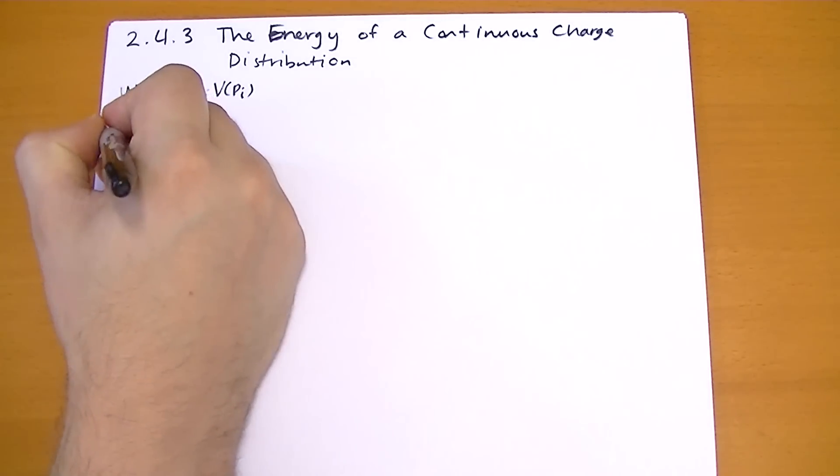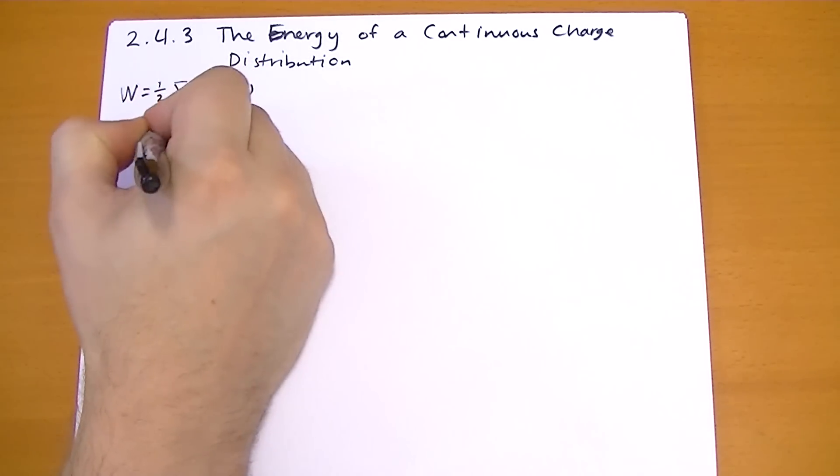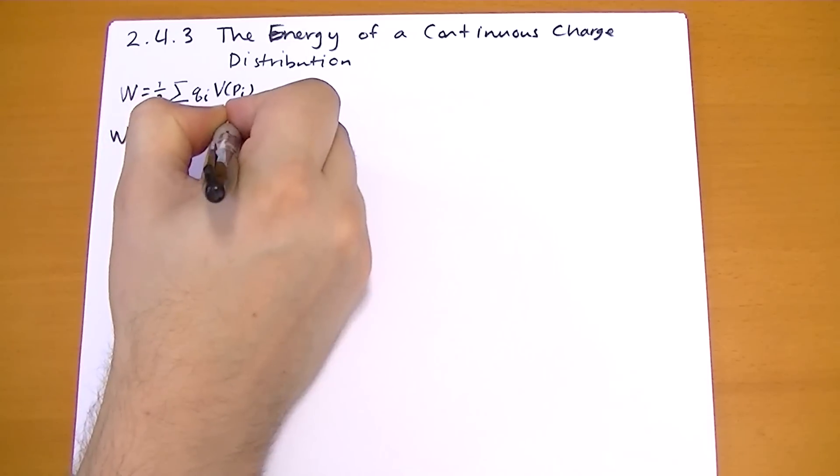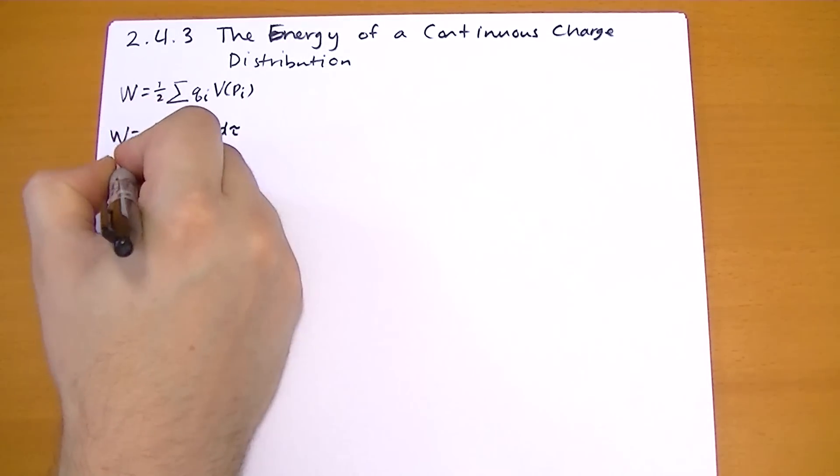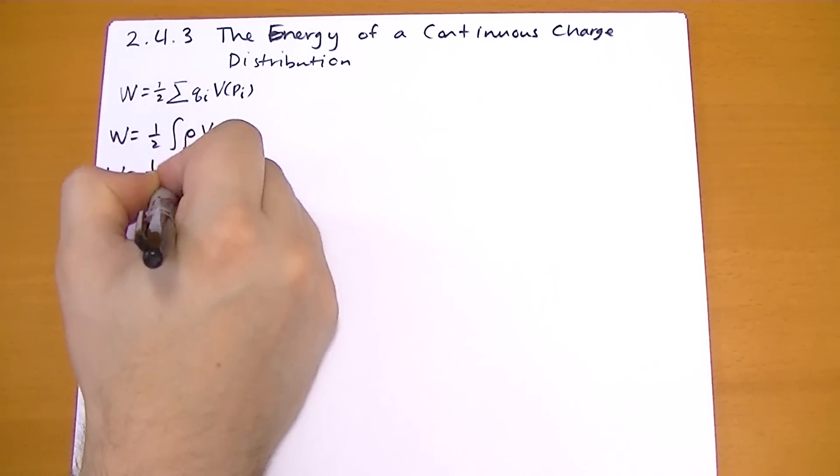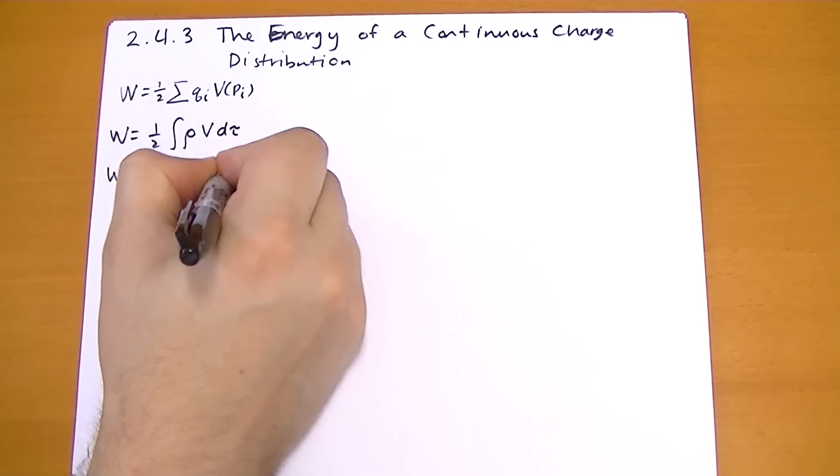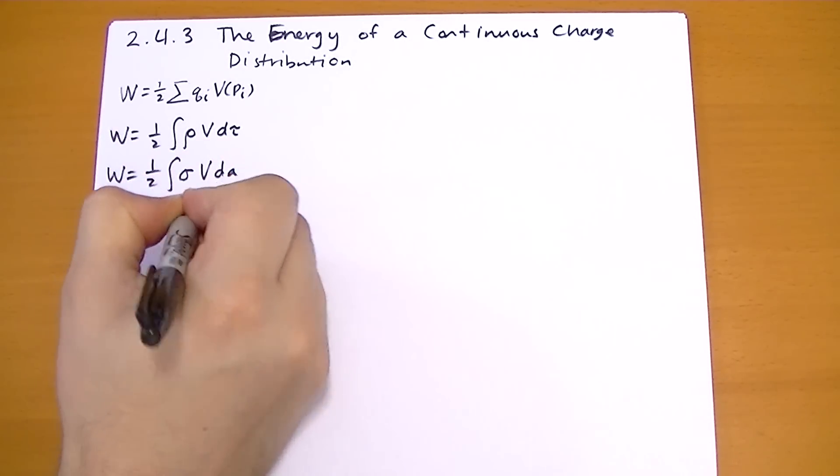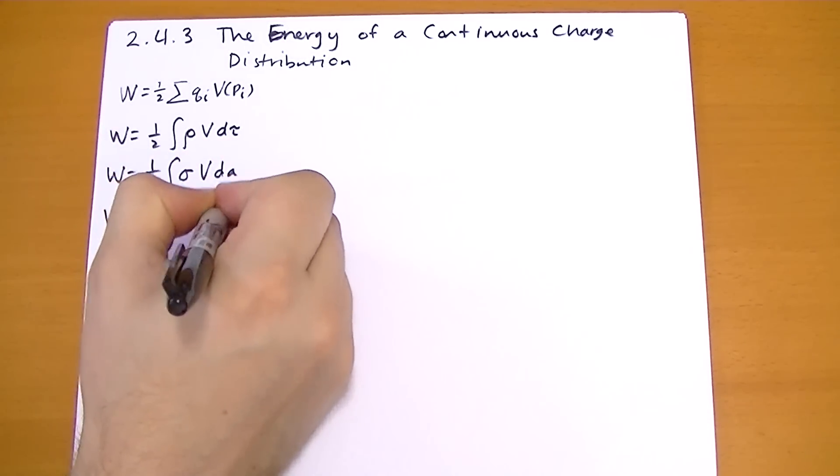Well for a volume charge we get one-half the integral of rho v d tau. And for surface area charge we get sigma v dA. And finally for linear charge density, lambda v dL.